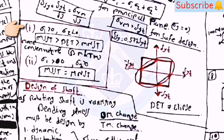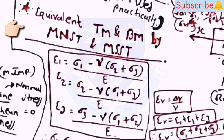Also, sigma_vm = √(sigma_1² − sigma_1·sigma_2 + sigma_2²), and sigma_vm = SYT/FOS. SSY = SYT/√3 = sigma_vm/√3. Remember: for sigma_1 > 0 and sigma_2 < 0, the order is MSST > DET > MNST (conservative to accurate). For sigma_1 > 0 and sigma_2 > 0, MSST = MNST.